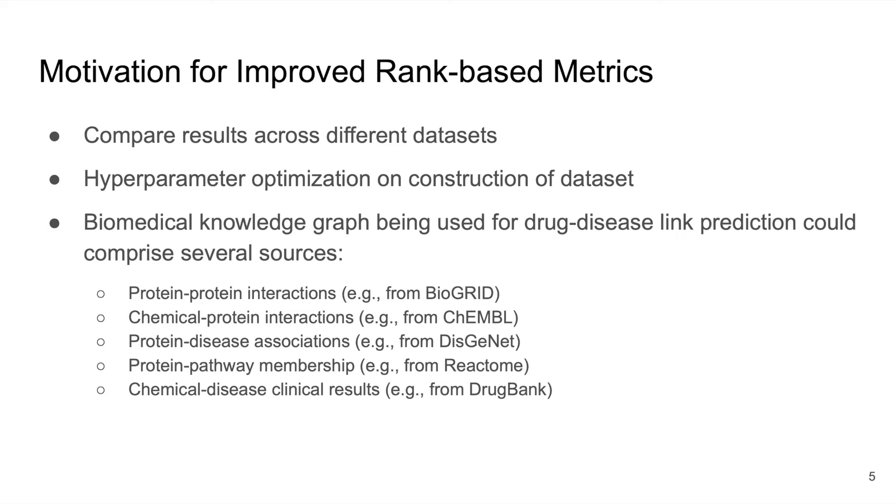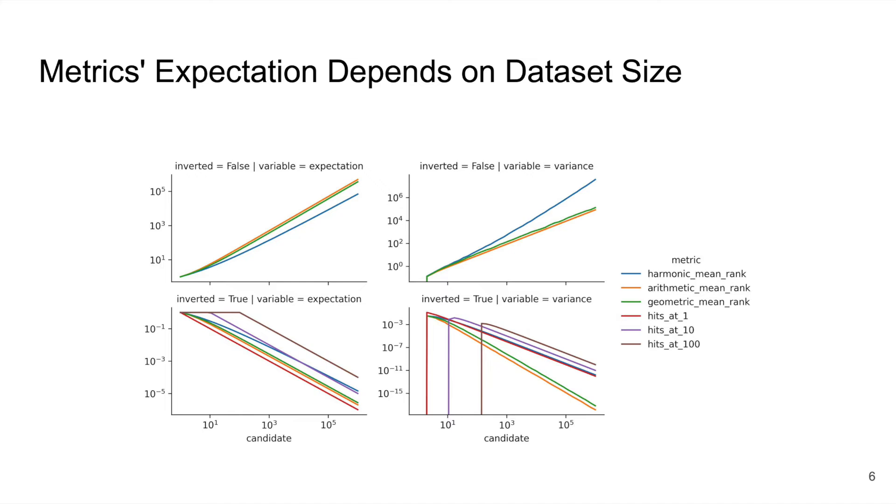As an example from drug discovery, you might want to formulate a biomedical knowledge graph using different combinations of resources to generate better drug-disease link predictions. But this would result in different size graphs with different topologies whose evaluation results currently aren't readily comparable. Just to send this notion home, we simulated the evaluation across random datasets to show the expected value and the variance of each metric increases with dataset size and show this in the first row of the chart.